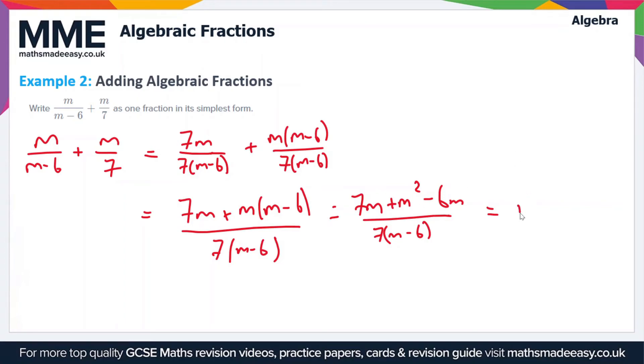This simplifies to m² plus m over 7(m-6), since 7m minus 6m is just m. We're nearly there but we can take out a factor of m from this numerator, so this gives us m(m+1) divided by 7(m-6). That's the simplified form of the fraction.